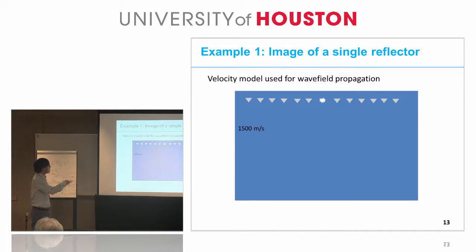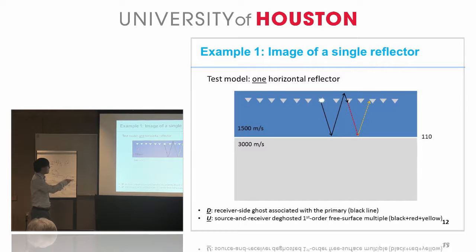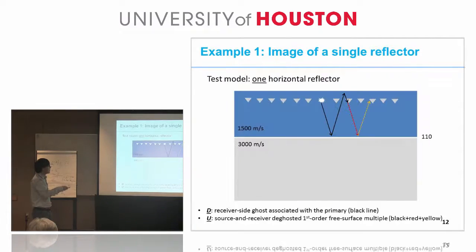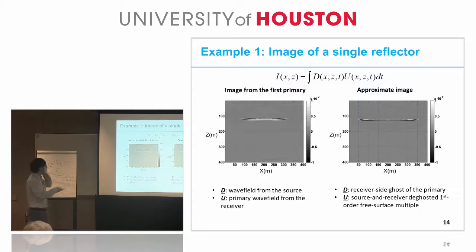Here is the velocity model we used for this wave field propagation. We calculated the wave field at depth. Because we have only one reflector, we can use this homogeneous velocity model. The picture on the right shows the results obtained by using the multiple to enhance the image and acquire the image of the unreported primary. For comparison, we provide results from imaging the primaries, where D is the wave field from the source and U is the primary wave field from the receiver. Comparing these two figures, the approximate image provided by using the multiple shows wider illumination compared to using the primary. The multiple shows added value to the imaging.